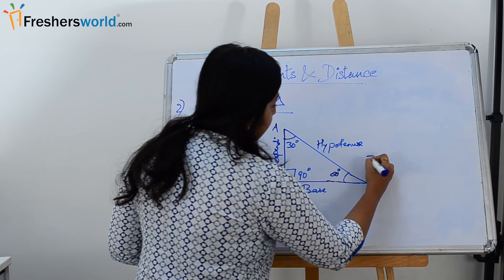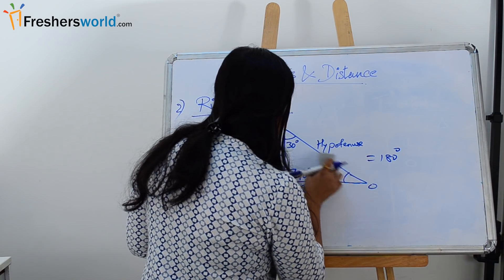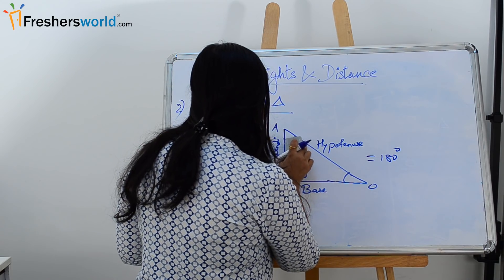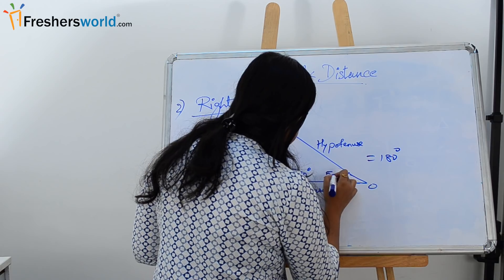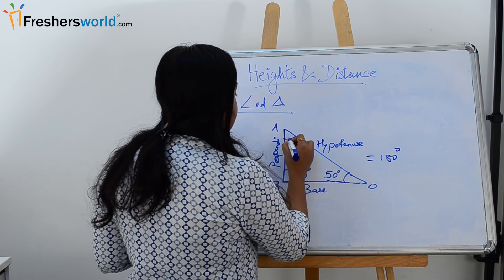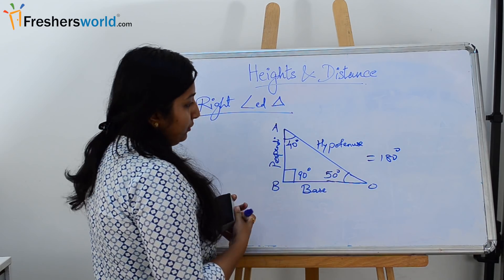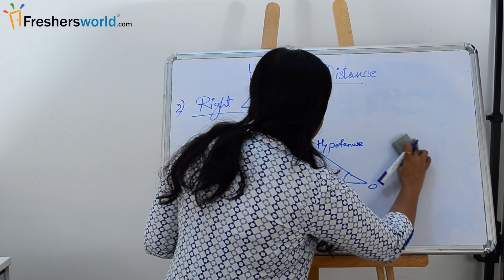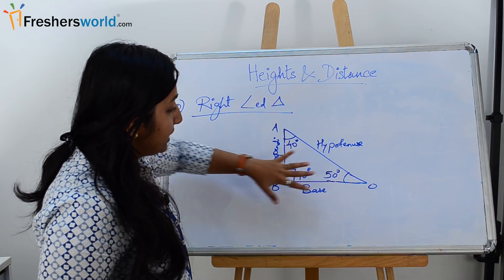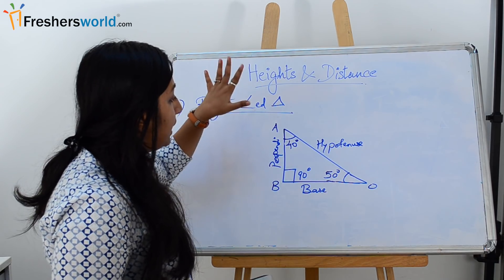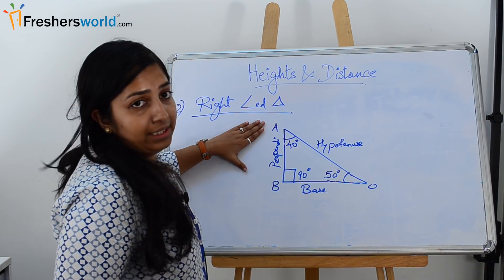For example, if one angle is 60 degrees, then the other would be 30 degrees, because 30 + 60 + 90 = 180. Similarly, if one angle is 50 degrees, the other would be 40 degrees to make 180 degrees. So the two key things to note are: the sum of all three angles is 180 degrees, and one angle is always 90 degrees.